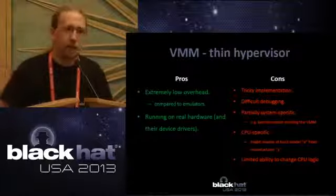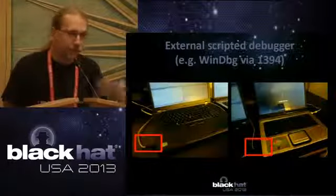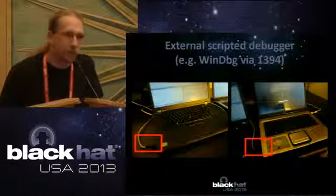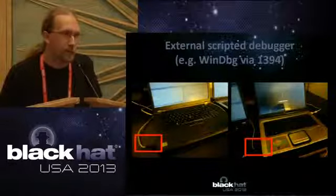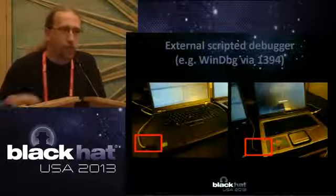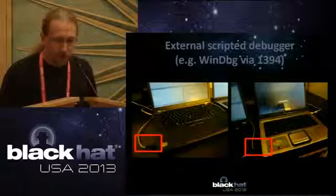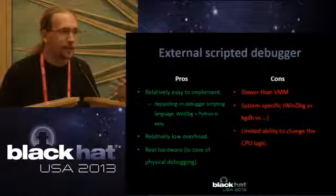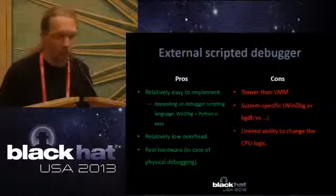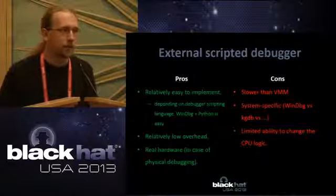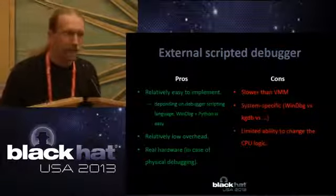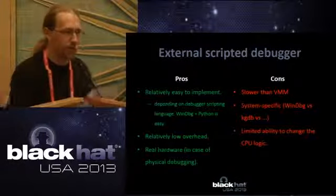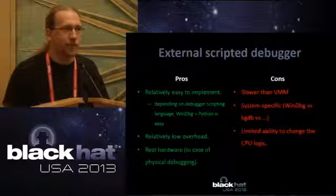Another approach would be using an external debugger — these are two laptops connected with a FireWire cable running Windows and WinDbg. You use an external debugger to instrument the running operating system. This is a pretty sweet approach: it's relatively easy to implement, especially if the debugger supports a scripting language like Python for WinDbg, and it has relatively low overhead compared to Bochs and can run on real hardware. However, it's still slower than a hypervisor, it's system-specific, and you cannot change the logic of the CPU.